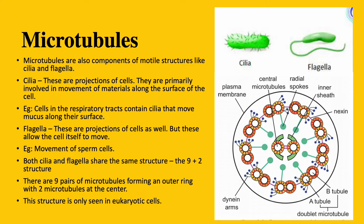However, in both cilia and flagella, microtubules are arranged in the same way. This structure is called the 9 plus 2 structure. This is because there are 9 pairs of microtubules forming an outer ring with two microtubules at the center, as you can see in the picture on the screen. This structure is unique to eukaryotic cells.